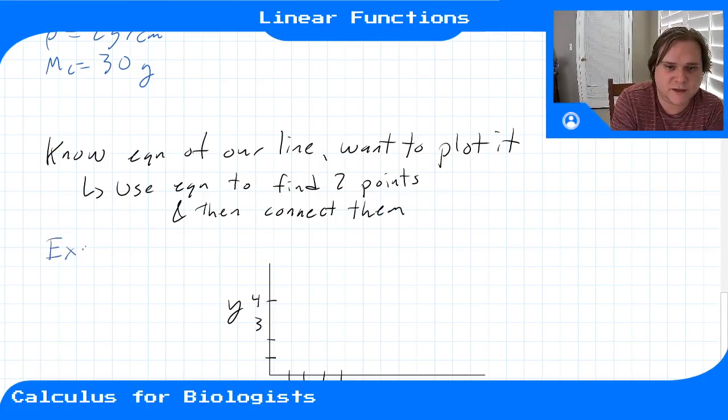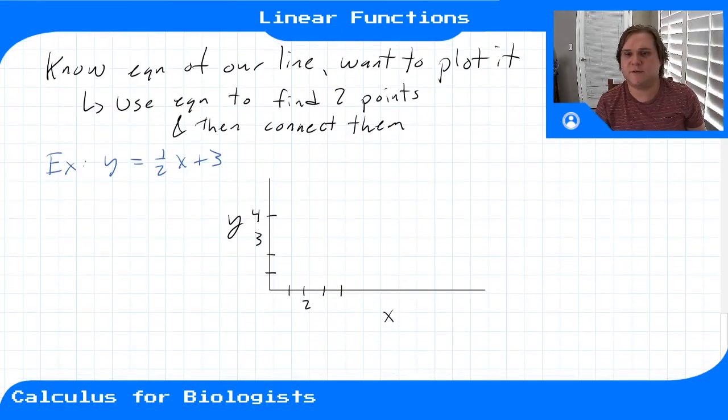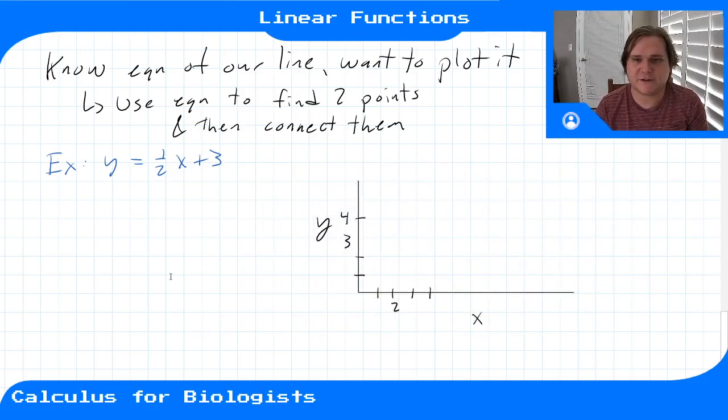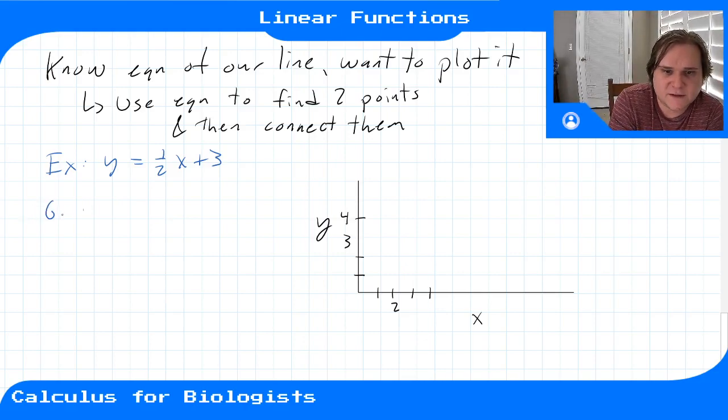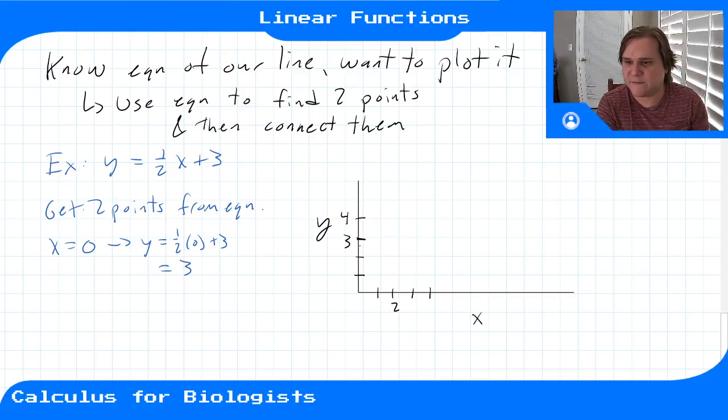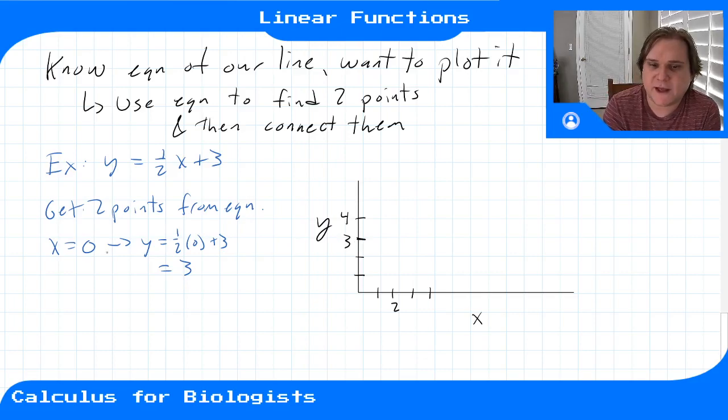So let's do an example. Let's say our function was y equals a half x plus 3. So we need to compute two points. Get points from the equation. So when it's in slope-intercept form, the easiest point to get would be x equals zero, right? That gives us y equals a half times zero plus 3. That just gives us the y-intercept. And so we can plot that first point. So when x is zero, y is three.